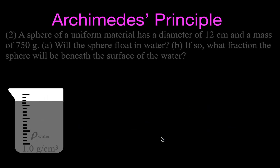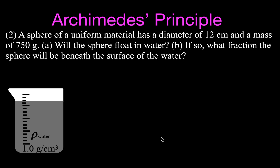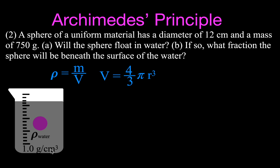For example number two, we have a sphere of uniform material with a diameter of 12 centimeters and a mass of 750 grams. We want to know: will that sphere float on water, and if so, what fraction of the sphere will be beneath the surface? The density of water is 1 gram per cubic centimeter, and since the values are given in centimeters and grams, we will use those units.